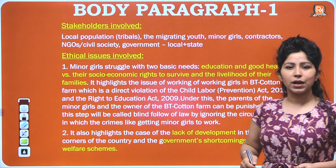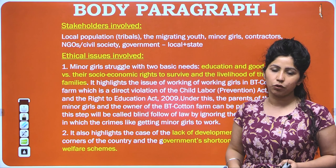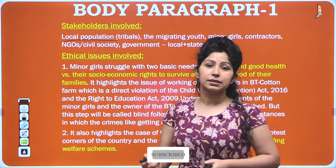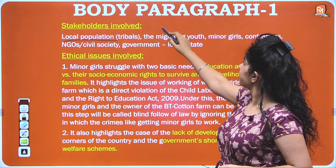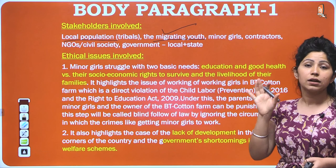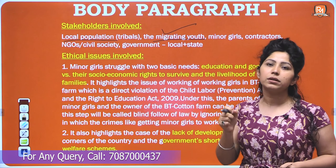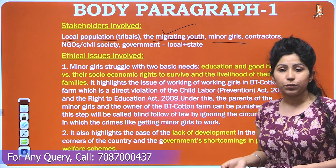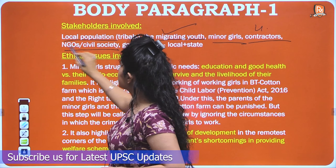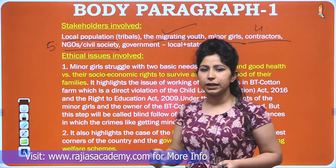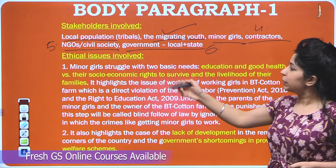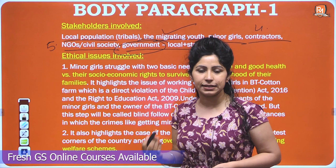In Body Paragraph 1, list the stakeholders involved. Starting from the exploited: first, the local tribal population; second, the migrating youth; third, the minor girls suffering health issues whose fundamental rights are being violated; fourth, the exploitative contractors; fifth, NGOs and civil society not doing their role effectively; and sixth, the government — local, state, and central.